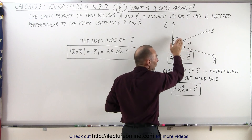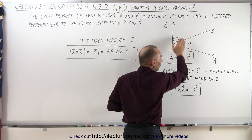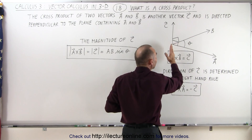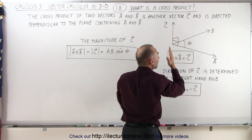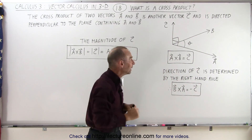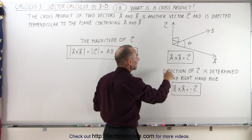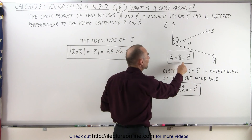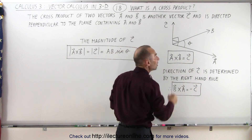So if you imagine that A and B are in a single plane, C will be perpendicular to that plane. We can say that A cross B is equal to C.